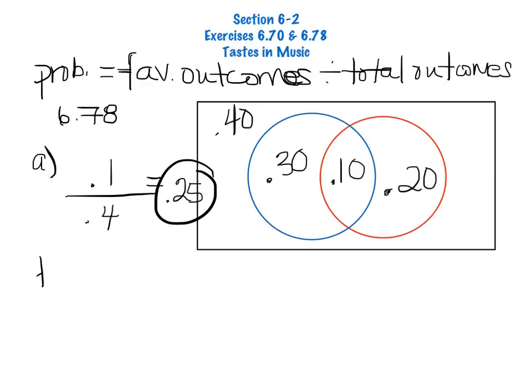Part B asks, what is the conditional probability that a student who does not like country music likes gospel music? So now here you have to be a little creative, and you have to think about things in a slightly different way.